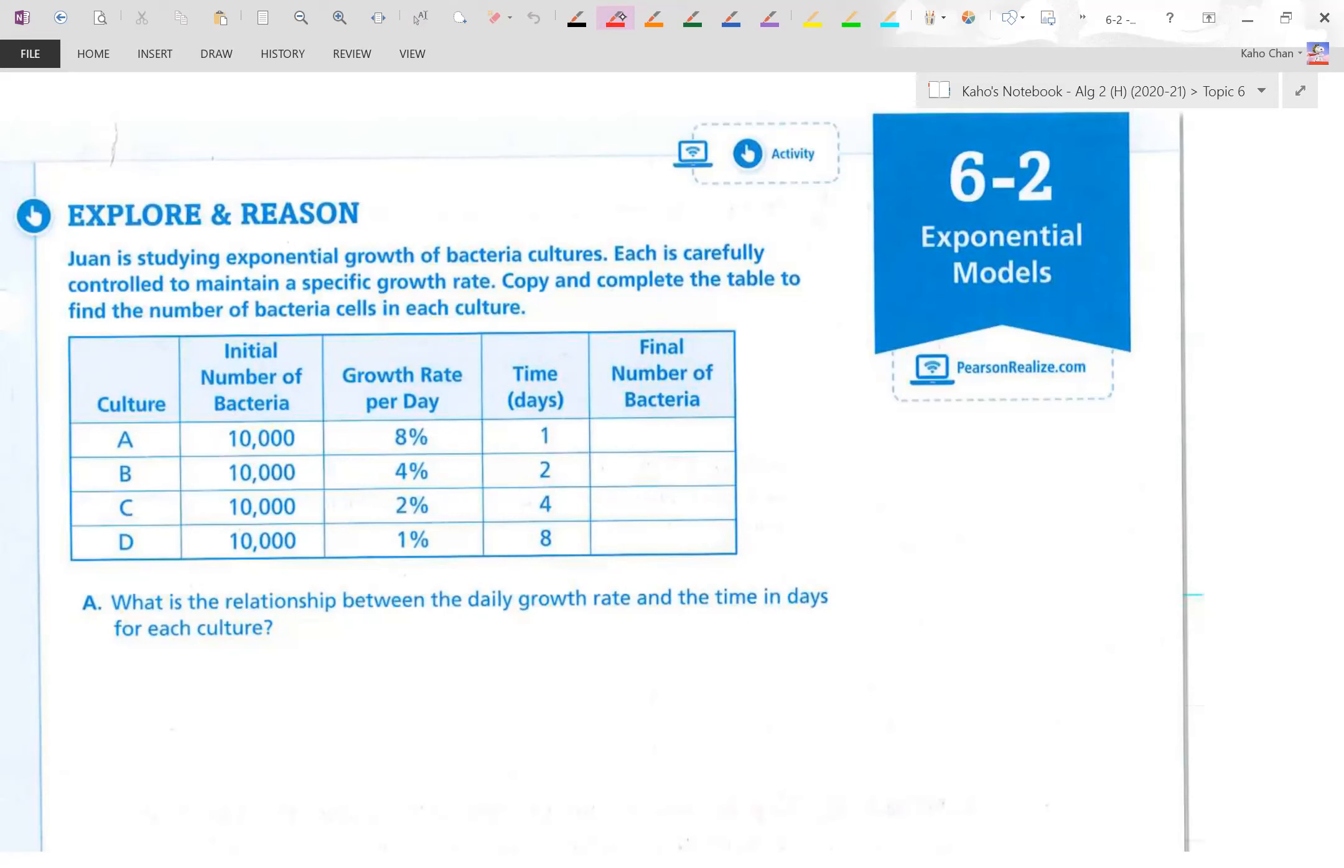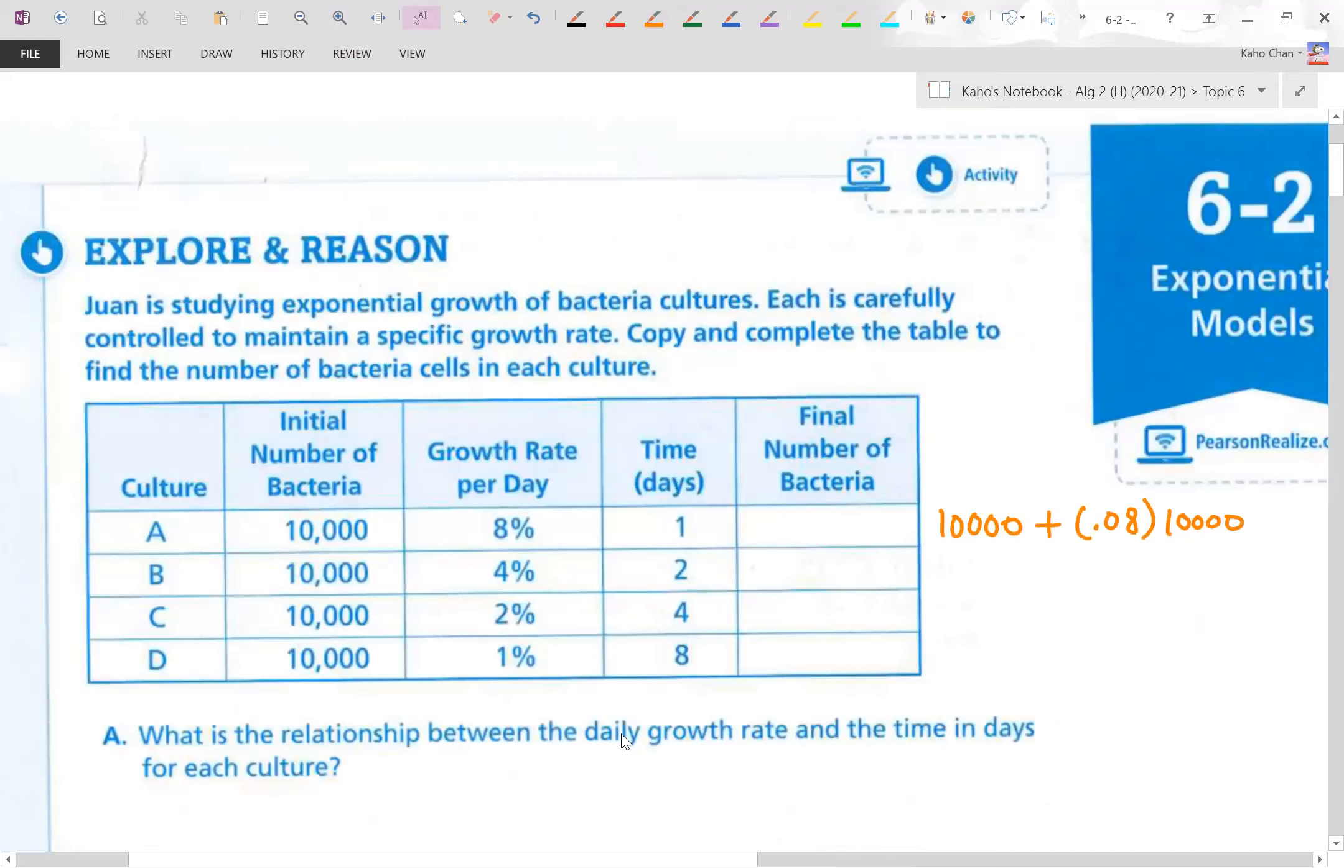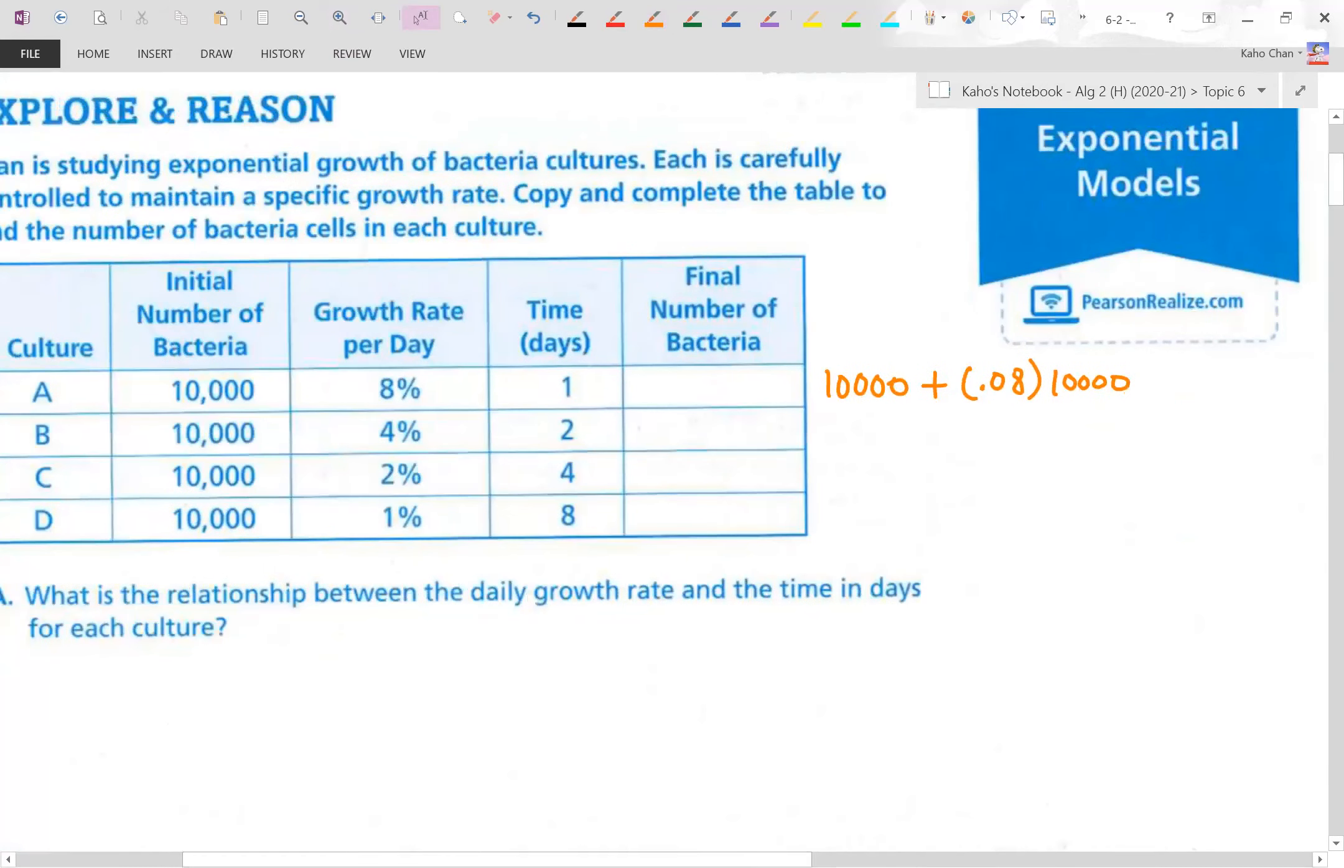So what I'm going to do here is to manually show you the calculation to figure out and fill out that table. Let's start with culture A with only one day that has passed. Keep in mind we are starting with 10,000 bacteria. Then we're going to add 8 percent of that 10,000 bacteria to its original amount. So I start out with 10,000 plus 8 percent of 10,000. 8 percent converted to a decimal is 0.08. Of means multiply 10,000. When you punch that into your calculator, you will get this answer right here. 10,800.